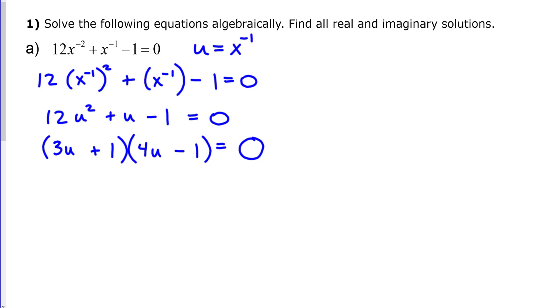So, I can take each one of these factors now and set them equal to 0. So, that I find 3u equals negative 1 or u equals negative 1 third. And 4u equals positive 1 or u equals 1 fourth.